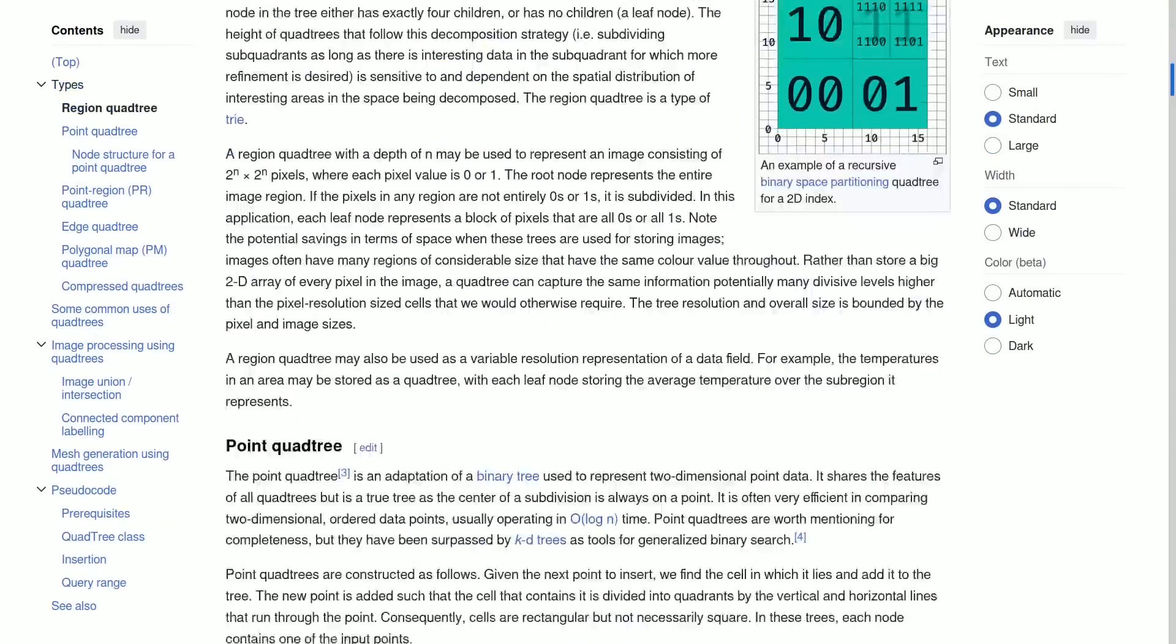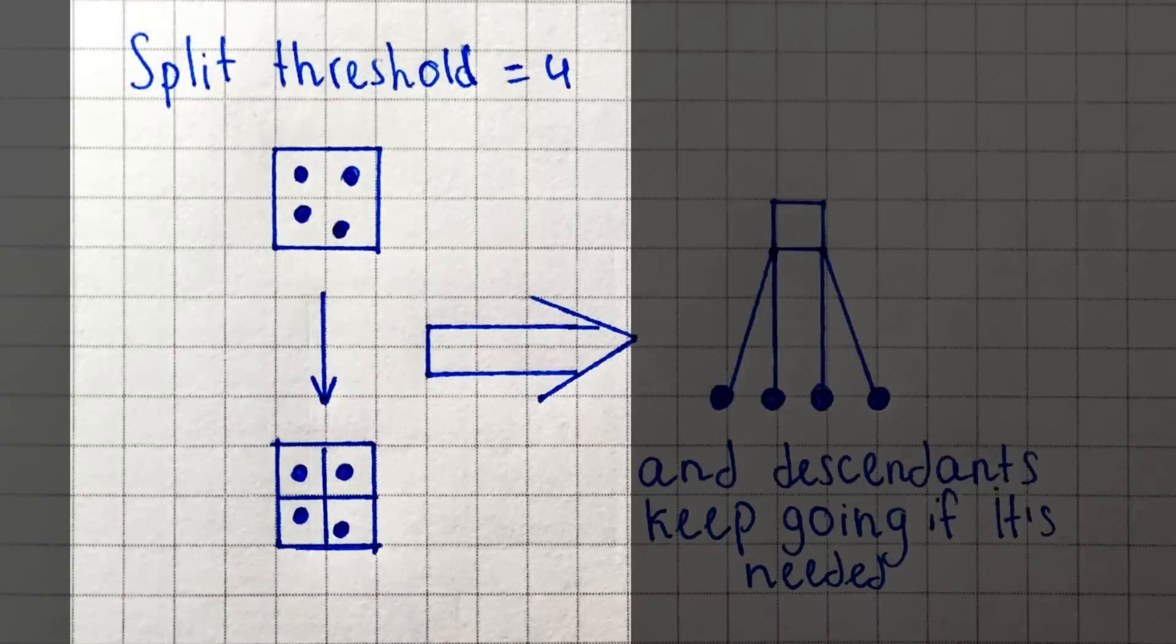What we could use for that is quad trees. You can read all of that, but here's the point. Each cell gets split into four quadrants, or children, when the threshold of objects inside it has been hit. We'll call this the split threshold.